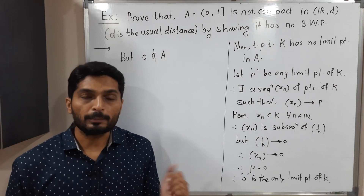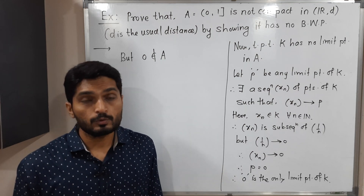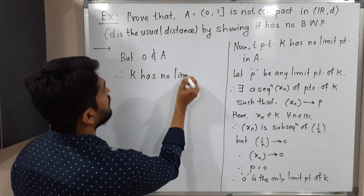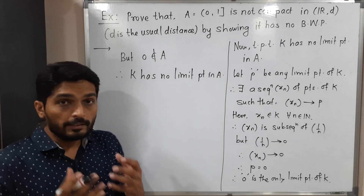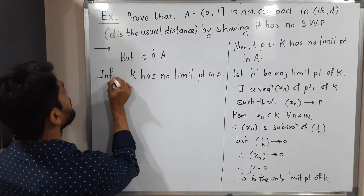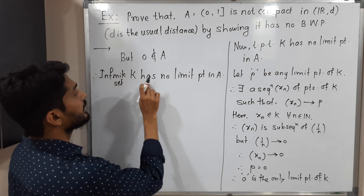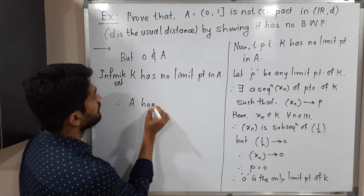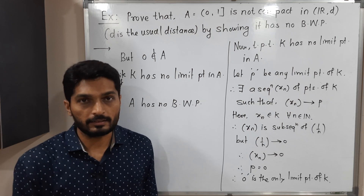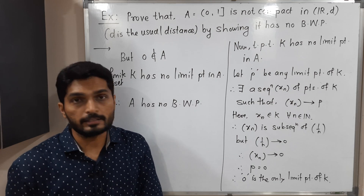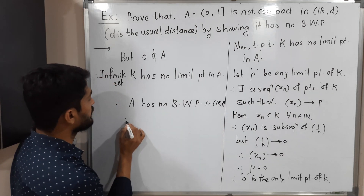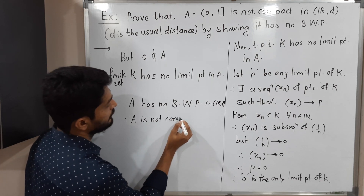K has a limit point, which is zero, but it does not belong to A. Therefore K has no limit point in A. So we have an infinite set K which has no limit point in A. Therefore A has no BWP — recall that BWP means every infinite set should have a limit point in the set. Since we found an infinite set with no limit point in A, A has no BWP in ℝ^d, and therefore A is not compact.